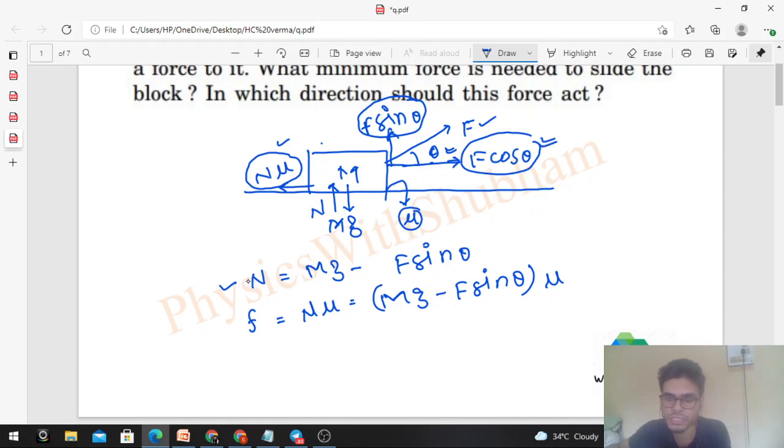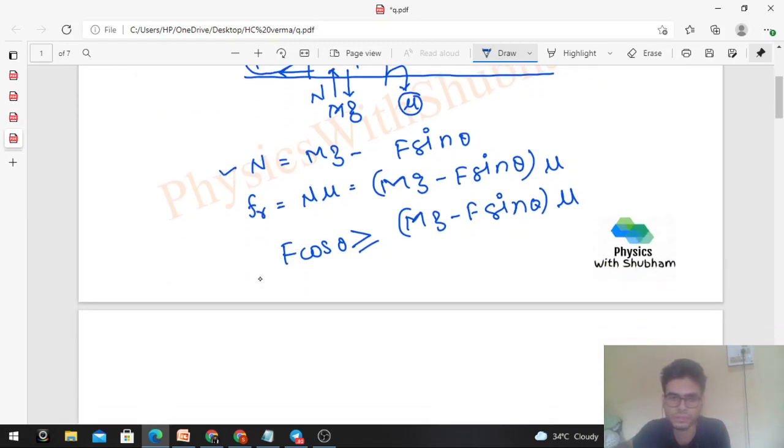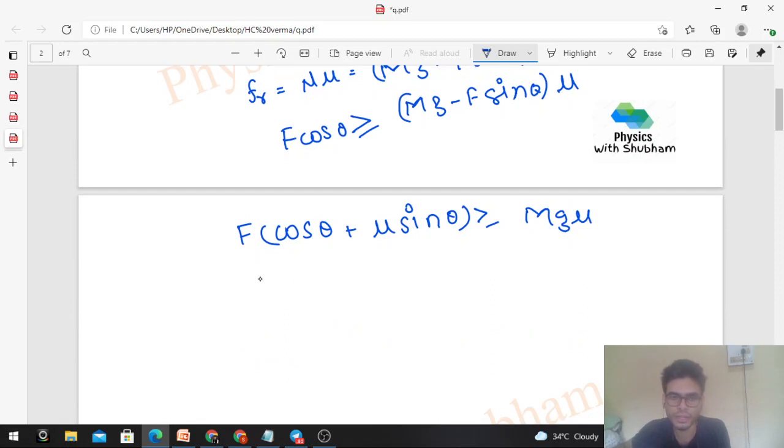To move this block, F cos θ is responsible. F cos θ should be greater than or equal to the friction force, which is (mg minus F sin θ) times μ. We can take the F terms to the left-hand side. So it becomes: F(cos θ + μ sin θ) should be greater than or equal to mg μ.